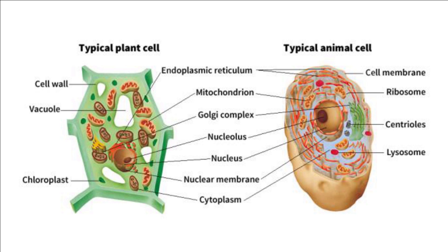Plant cells and animal cells have many similarities. They both have a nucleus and mitochondria, just to name a couple. Despite their remarkable similarities, the few differences between animal cells and plant cells are significant.